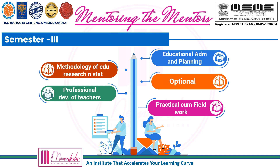The third semester comprises three mandatory subjects, and the fourth one is optional with a number of options available. The mandatory subjects are Methodology of Educational Research and Statistics (the advanced version), Professional Development of Teachers, and Educational Administration and Planning. For all three subjects, you need to opt for either Elementary Education or Secondary Education, along with Practicals and Fieldwork.